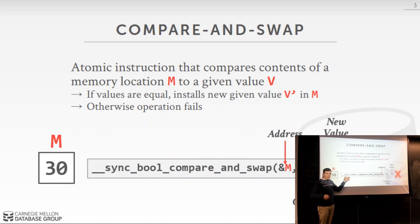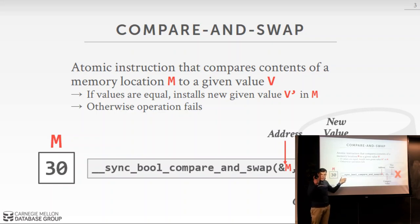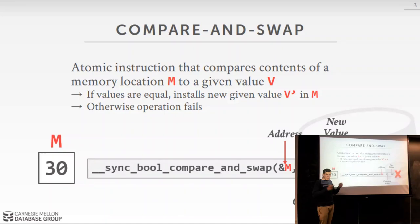In C++ you can also use `std::atomic` — you can wrap an integer, boolean, or other primitive type in the atomic flag and that provides the same functionality. In general, when writing C++, you don't always want to write intrinsics directly; you want to use what C++ provides you.